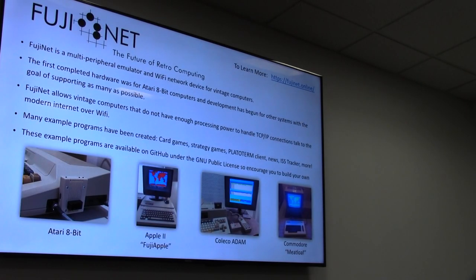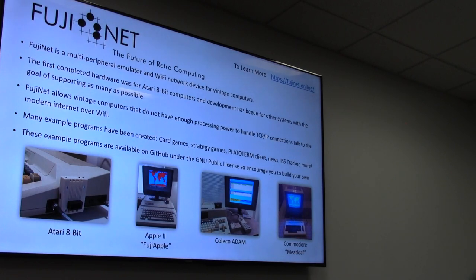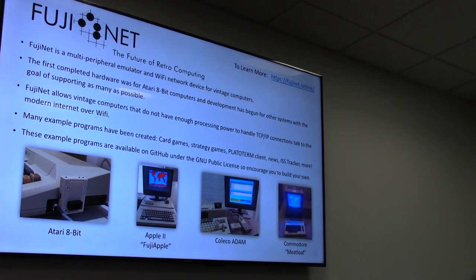A little side chat about the FujiNet. The FujiNet is a multi-peripheral emulator and Wi-Fi network adapter for many different vintage computers. It was targeting Atari, Apple, Coleco, and Atom — that's where it got its start. This allows vintage computers that don't have enough processor power to handle a TCP/IP stack to gain access to the internet. There are lots of example programs: card games, strategy games, something called Plato Term which is a whole news and information portal. The ISS tracker was written for this. These example programs are available on GitHub — anyone can download the source code, see how it works, build their own, or improve on it.